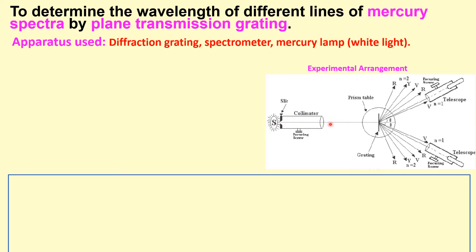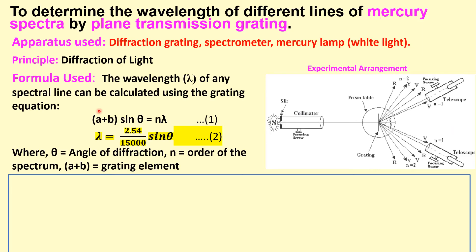From the source, white light is passed through the grating using the collimator. In the center we get the bright zeroth order, and then we get first order and second order spectra on both sides of the spectrometer. The principle of this experiment is based on the diffraction of light and the formula used is the grating equation: (a + b) sin θ = nλ.